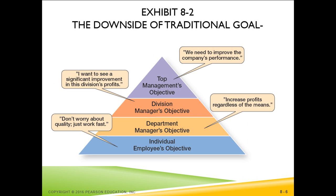A problem with traditional goal setting is that when top managers define the organization's goals in broad terms — such as achieving sufficient profits or increasing market leadership — these ambitious goals have to be made more specific as they flow down through the organization. Managers at each level define the goals and apply their own interpretation and biases as they make them more specific. However, what often happens is that clarity is lost as the goals make their way from the top of the organization down to the lower levels.